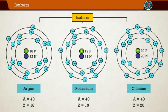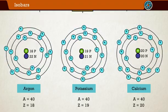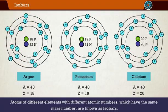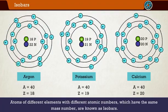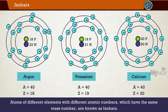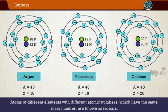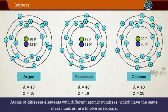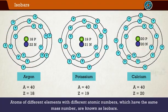Guess you got an idea of what are isobars. Atoms of different elements with different atomic numbers which have the same mass number are known as isobars. The number of protons and neutrons alone will vary, but the number of nucleons, or the sum of protons and neutrons in isobars, will always be the same.